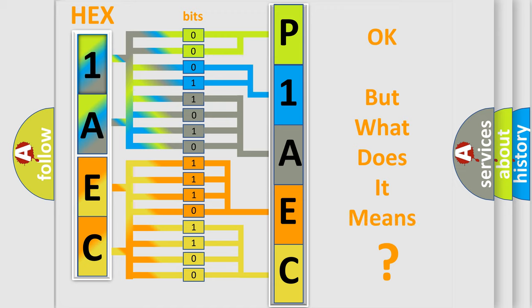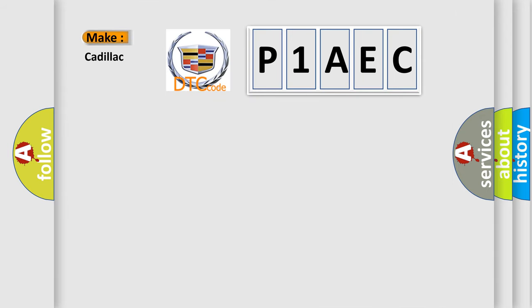The number itself does not make sense to us if we cannot assign information about it to what it actually expresses. So, what does the Diagnostic Trouble Code P1AEC interpret specifically for Cadillac car manufacturers?